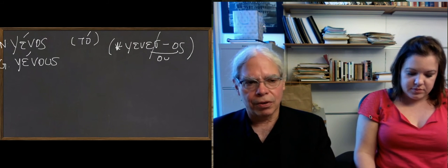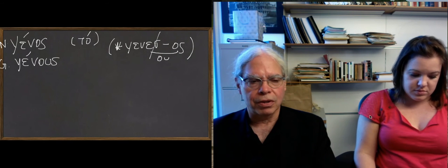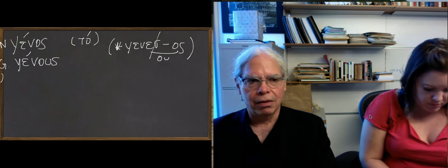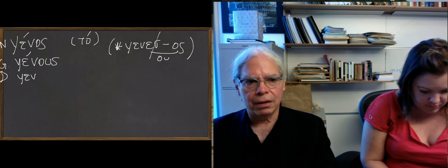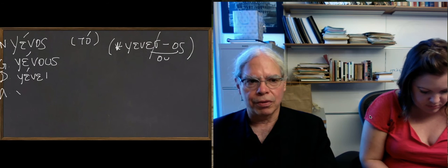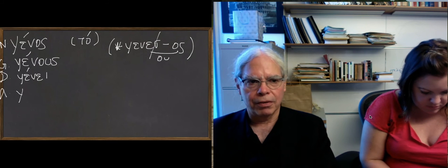The dative form in the singular is genei, G-E-N-E-I. And the accusative, of course, is the same as the nominative, genos.